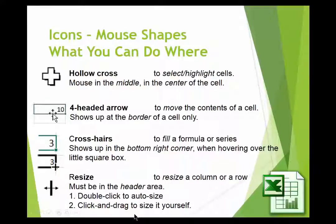There's a link in the explanation to a written document where you can read this on your own time. But there are four different mouse icons — the shapes of the mouse — that are really, really important in Excel. Each one has a specific purpose, and the most common cause of problems at the beginning is getting your mouse in the wrong place of the cell, which results in the wrong icon, which results in the wrong activity.